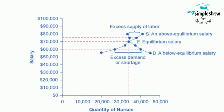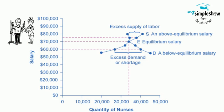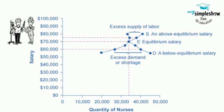Labor market example: demand and supply for nurses in a city. At equilibrium, the quantity supplied and the quantity demanded are equal. The demand curve, D, of those employers who want to hire nurses intersects with the supply curve, S, of those who are qualified and willing to work as nurses, at the equilibrium point E. The equilibrium salary is $70,000 and the equilibrium quantity is 34,000 nurses. At an above-equilibrium salary, an excess supply or surplus of nurses would exist. At a below-equilibrium salary, excess demand or a shortage exists.